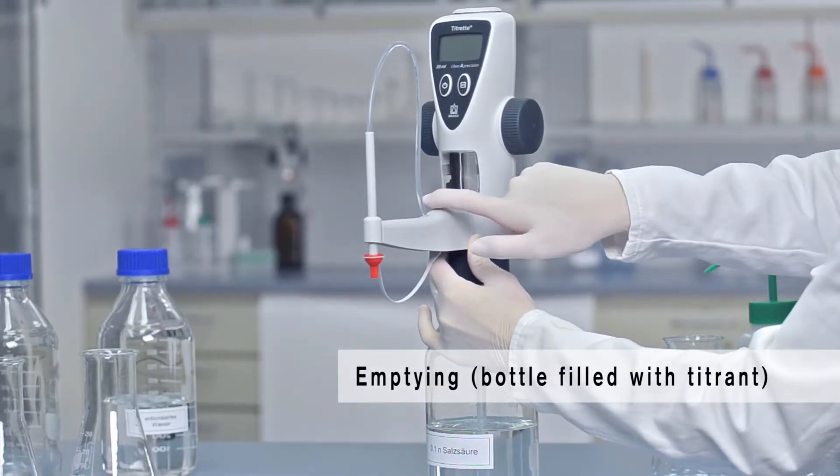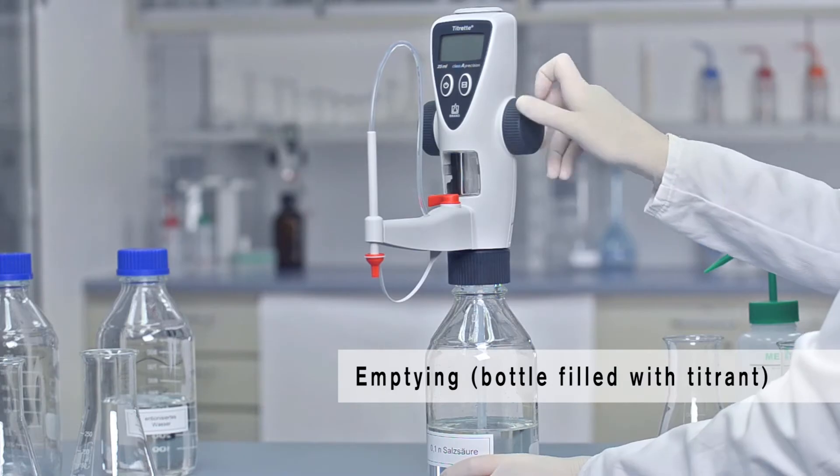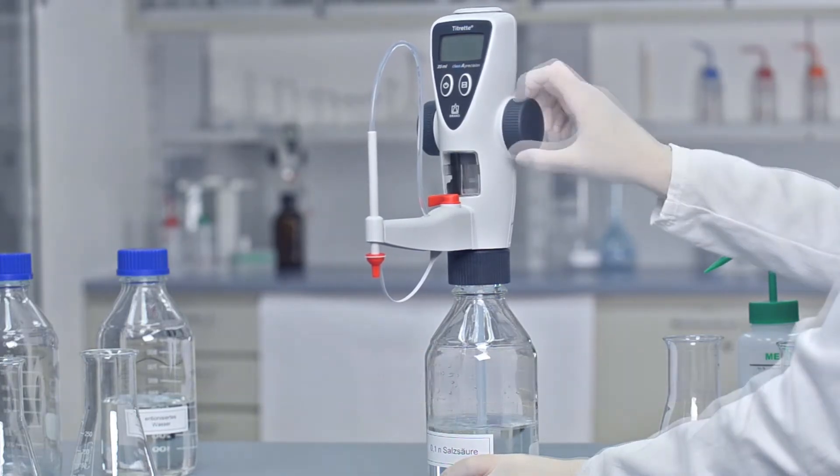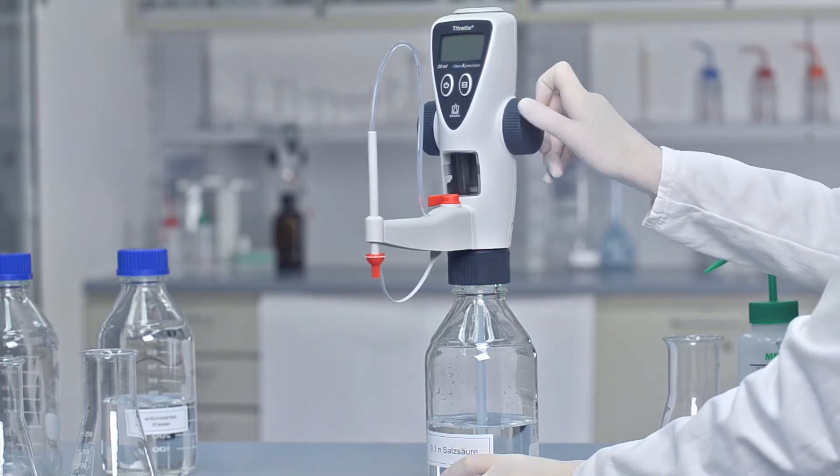First, set the valve to recirculate and empty the instrument completely. To do this, use the hand wheels to position the piston in the fully down position.